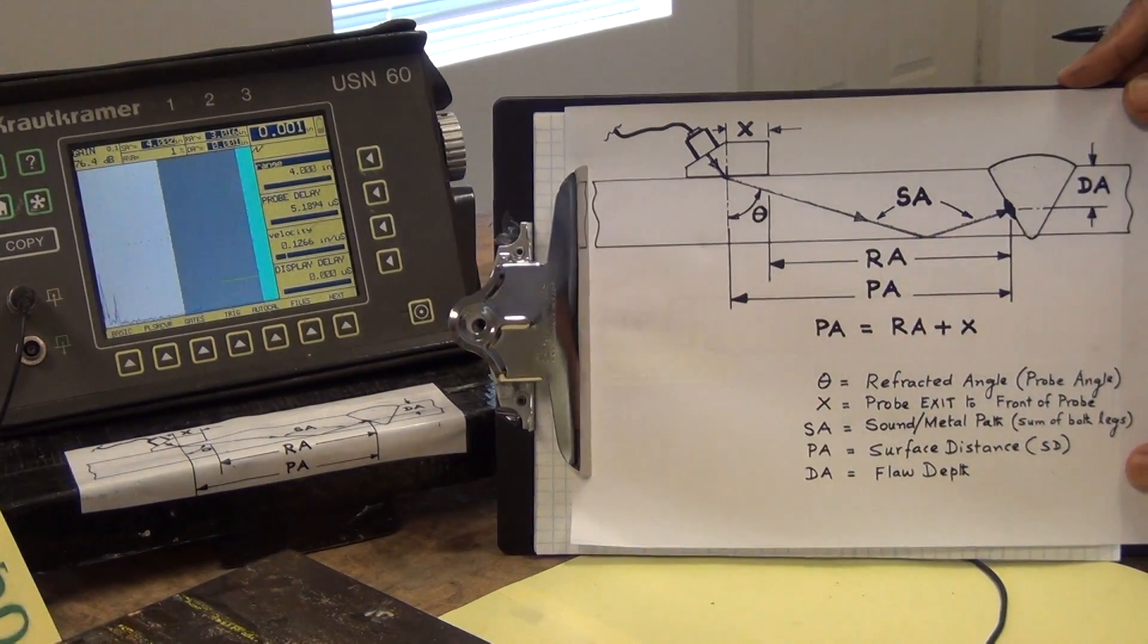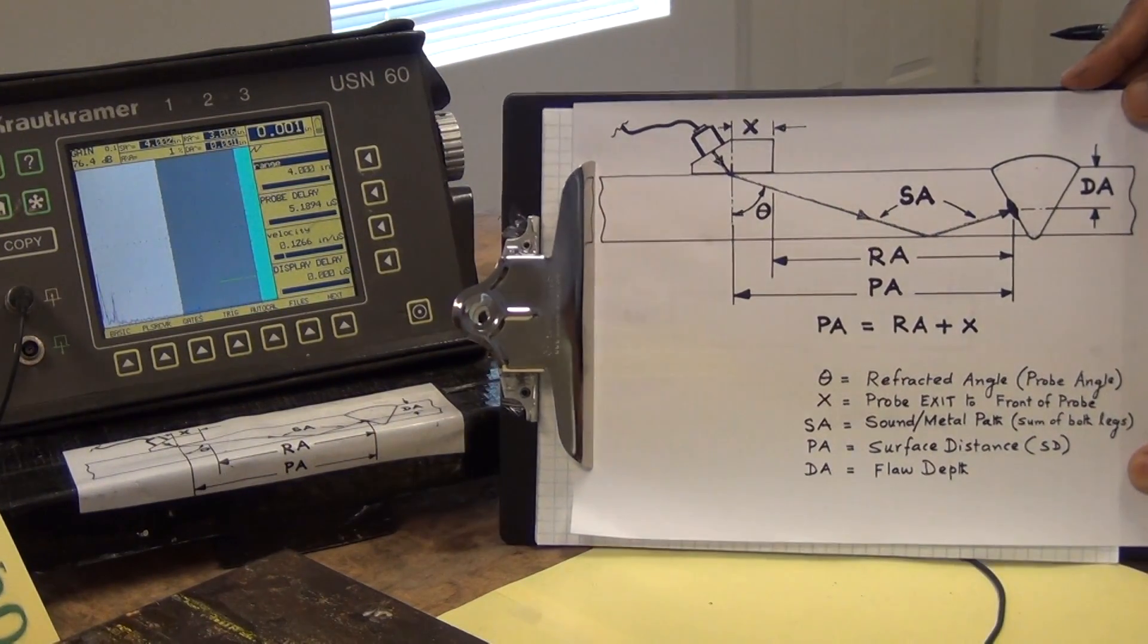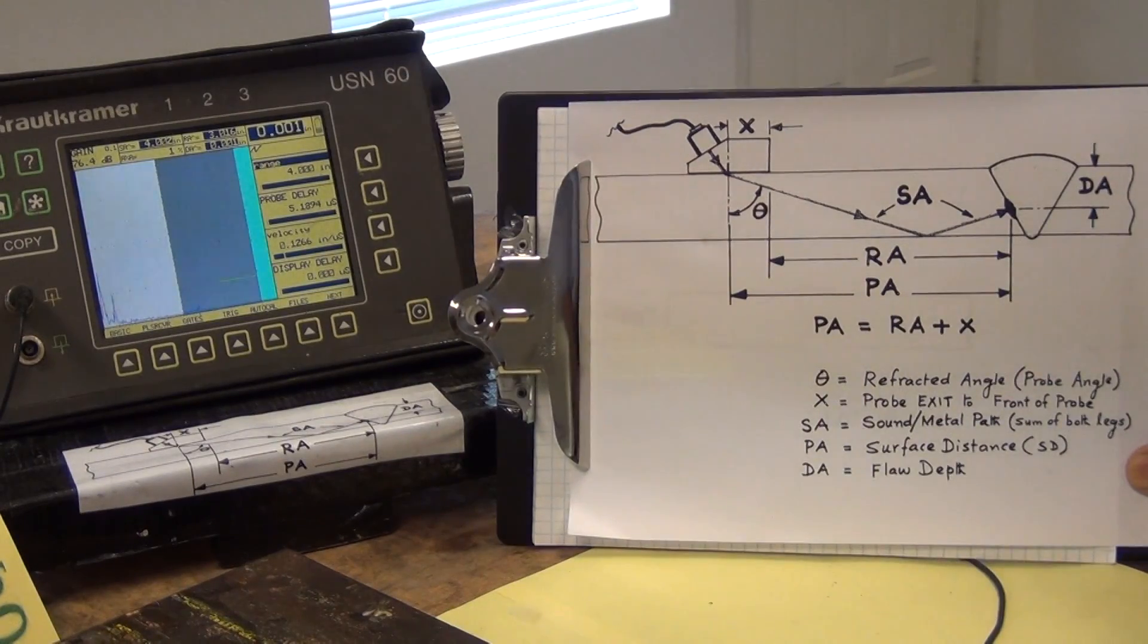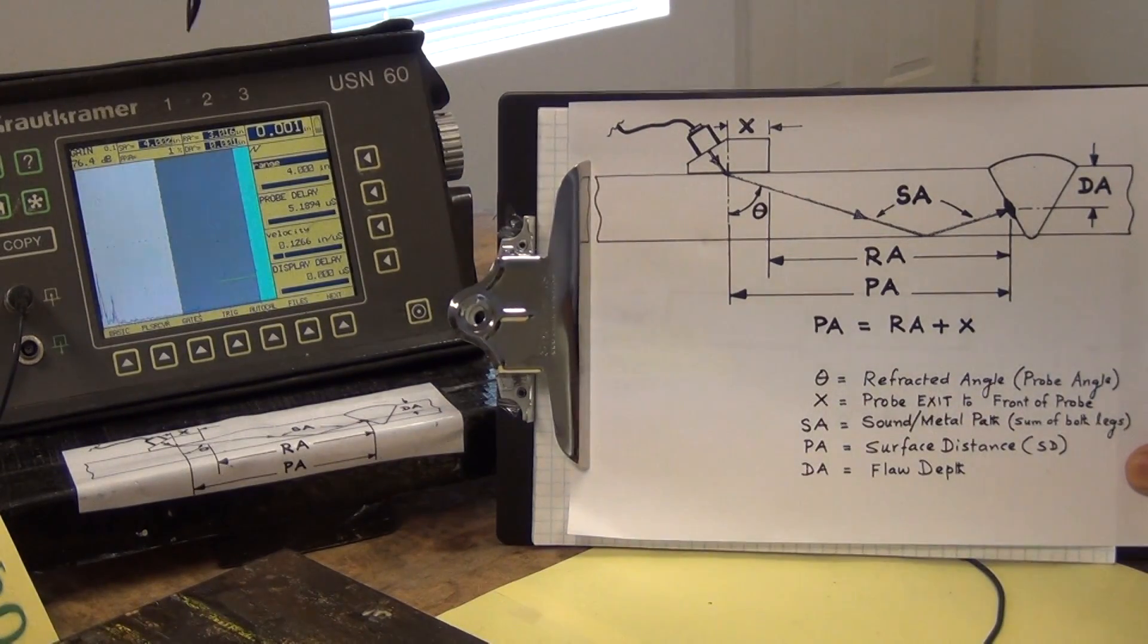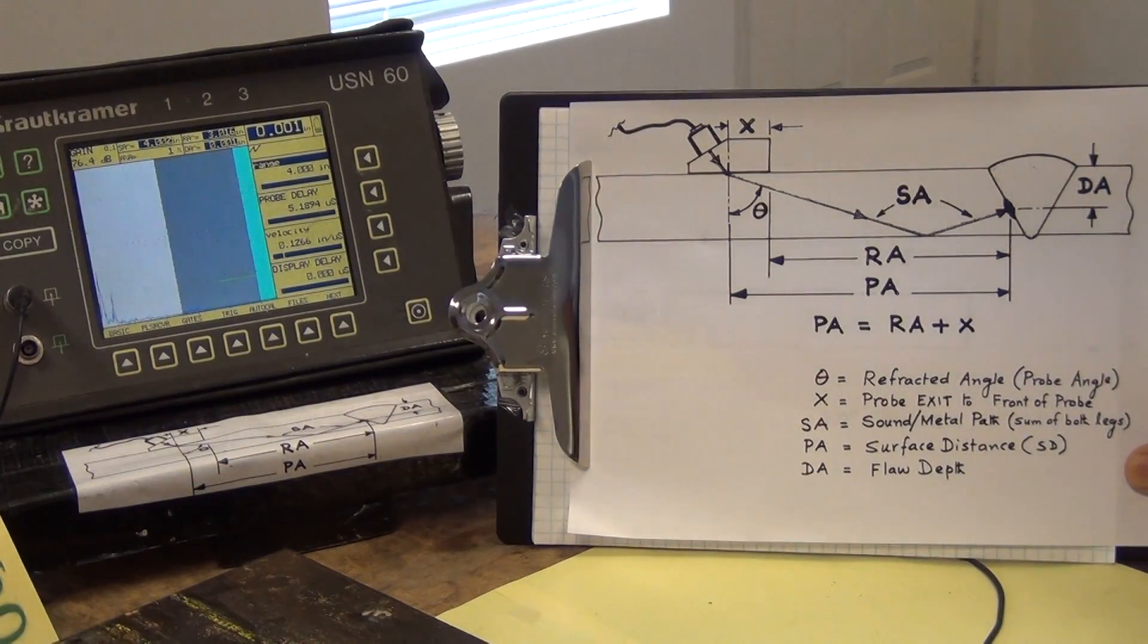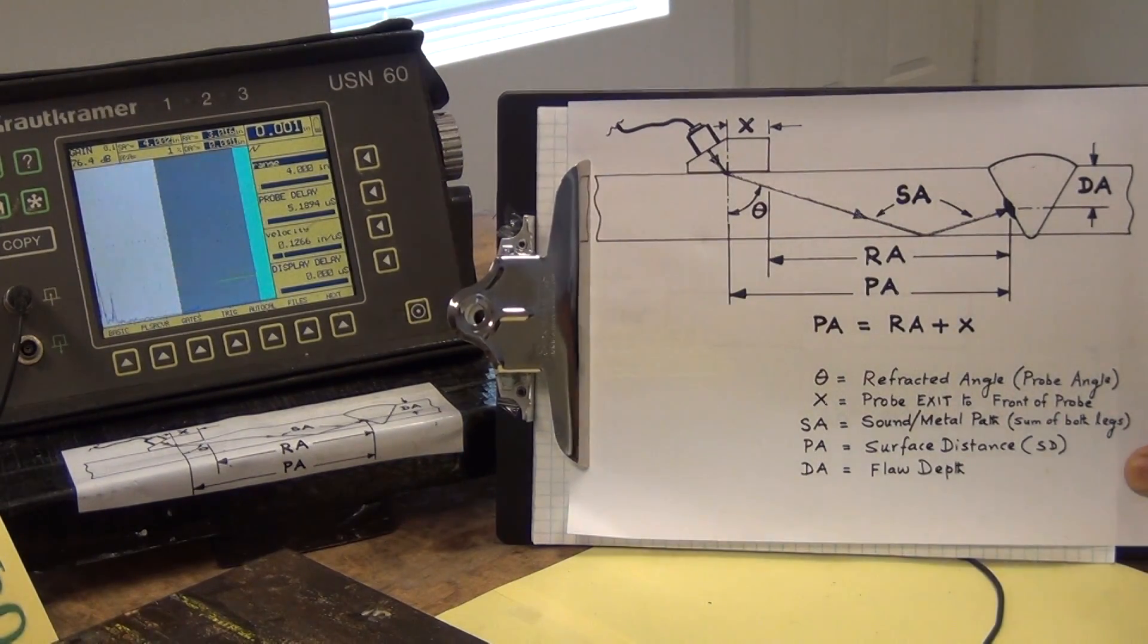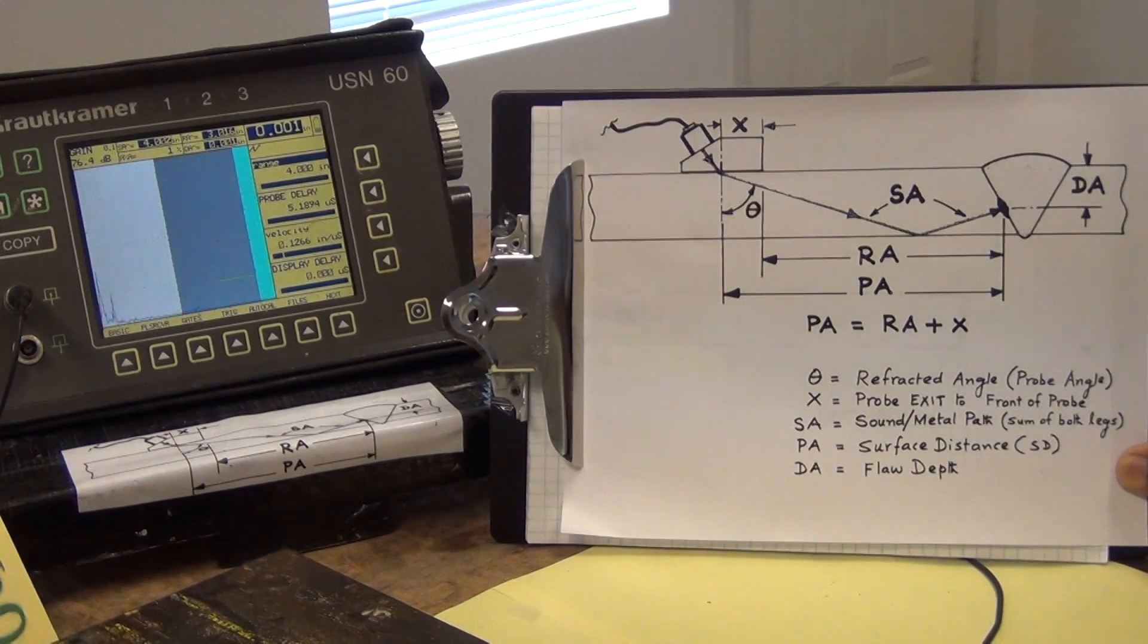Let me explain the setup before we start the inspection. We entered the part thickness of one inch and the refracted angle of the probe, 60 degrees. Based on that, the machine is set up now.